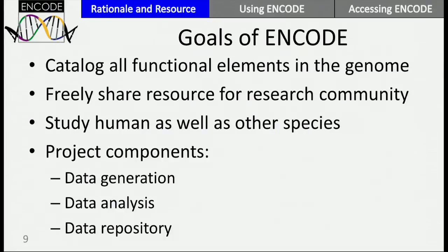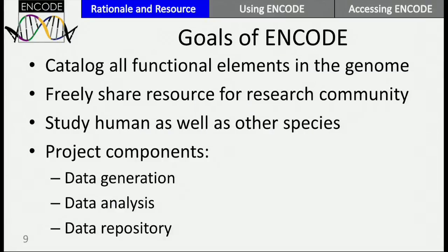Richer maps can help us understand more from the genome, and hopefully that can be one part of solving the cancer puzzle. The goals of ENCODE are to catalog all of the functional elements in the genome — an aspirational goal. I don't think it's technically achievable, and there would be no way to know when it were achieved. We're also freely sharing this as a resource; if you have internet access, you have access to ENCODE.